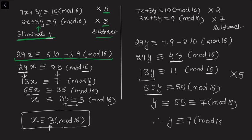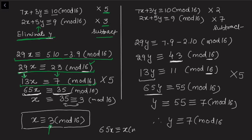Simplifying, 29x ≡ 23 (mod 16). Since 29 > 16, we reduce: 29 ≡ 13 (mod 16) and 23 ≡ 7 (mod 16), giving 13x ≡ 7 (mod 16). To solve this, multiply both sides by 5: 65x ≡ 35 (mod 16). Now 65 = 64 + 1 ≡ 1 (mod 16) since 16 divides 64, so 65x ≡ x. Also 35 ≡ 3 (mod 16). Therefore x ≡ 3 (mod 16).